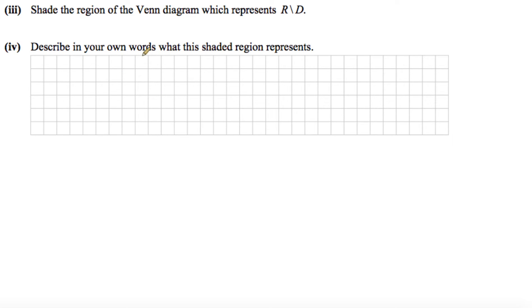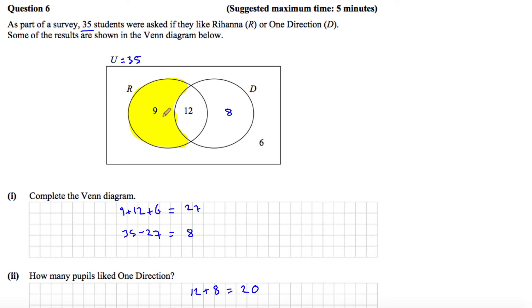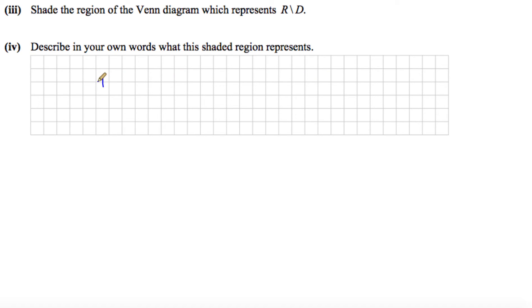And then part 4 says describe in your own words what this shaded region represents. If we go back and have a look, these are the students who like Rihanna but not One Direction, or the students who like Rihanna only. And that's the end of the question.